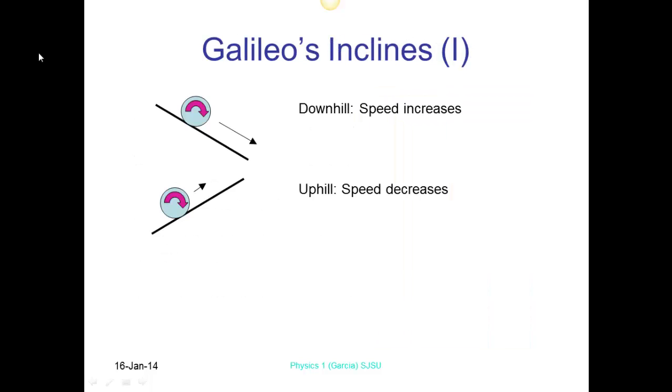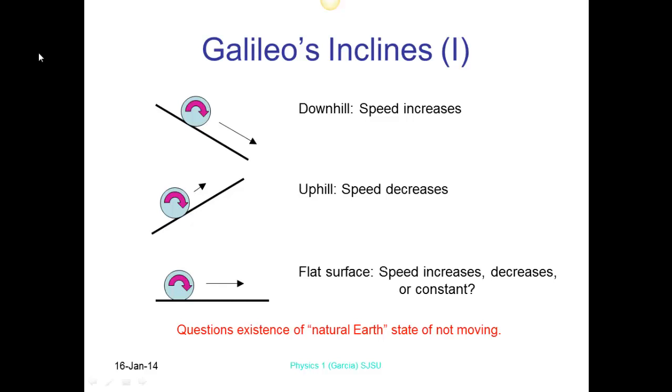So Aristotle's inclines. Downhill, he talked about the speed increasing. Going uphill, the speed decreases. We would accept that, that's fine. If an object is actually rolling, what Aristotle was saying, does the speed increase, does the speed decrease or is it constant? So it's a natural earth state. So technically this thing doesn't want to be moving. So Aristotle's idea would be that this thing would stop. In reality, yes, it will stop eventually because there will be frictional forces, but it will keep rolling for a period of time.